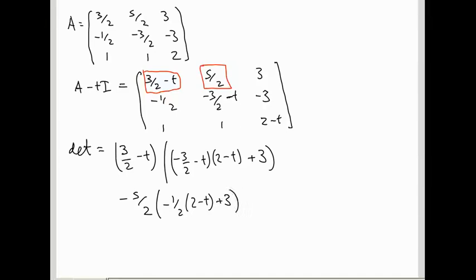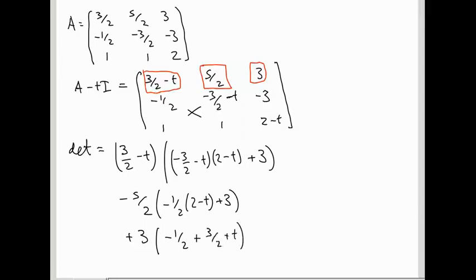And finally, I need to take the third term on the first row, which is 3, times this sub-determinant here. That's going to be minus 1 half, times 1, minus, minus, so plus 3 halves, plus t. Phew, yuck.